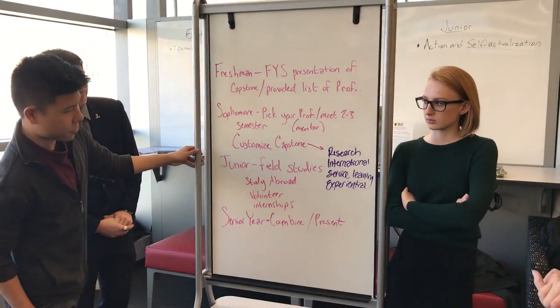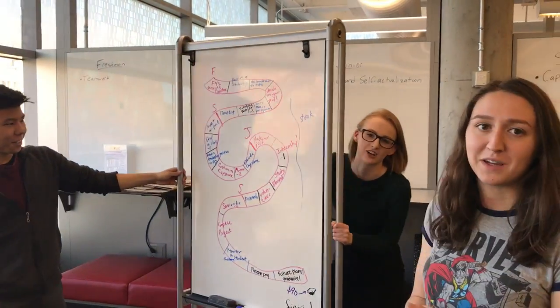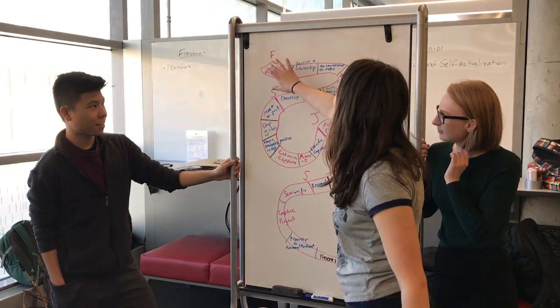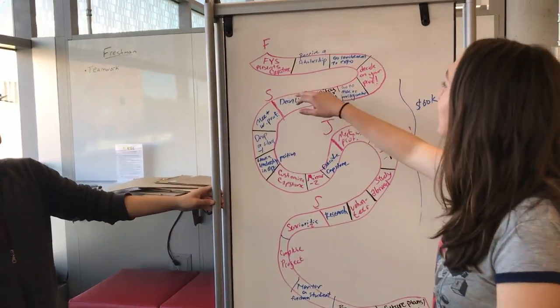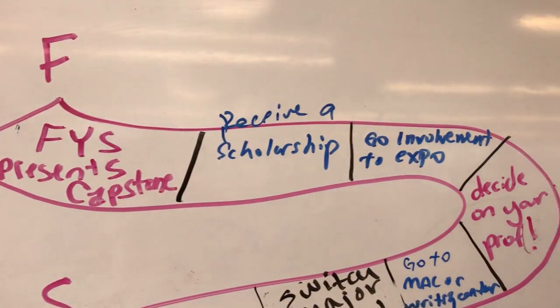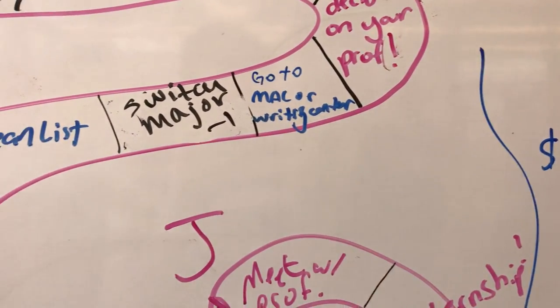To build off that we created a game. We're short on time so we're not going to make you guys play the game but it's a Candyland game for the record. This is how you would progress through the freshman year where you pick your, or you look at the professor FYS, present your capstone sophomore year through your junior year and then finally you can graduate.